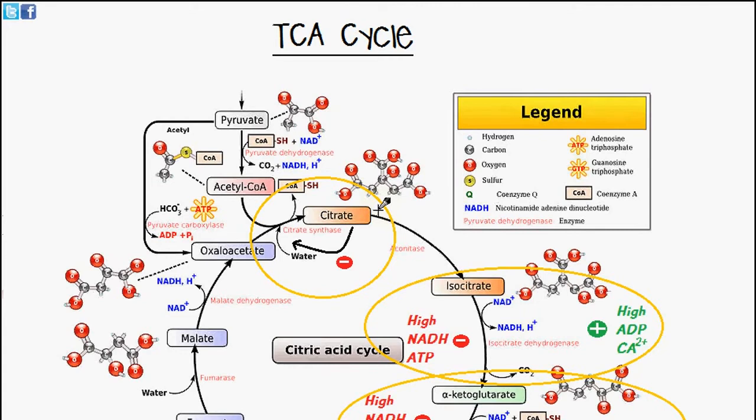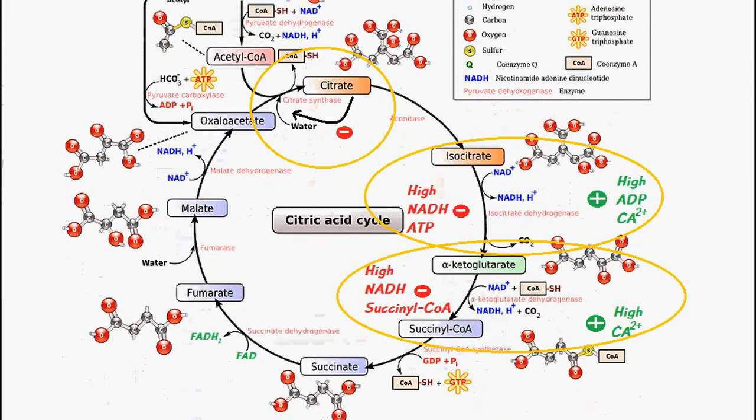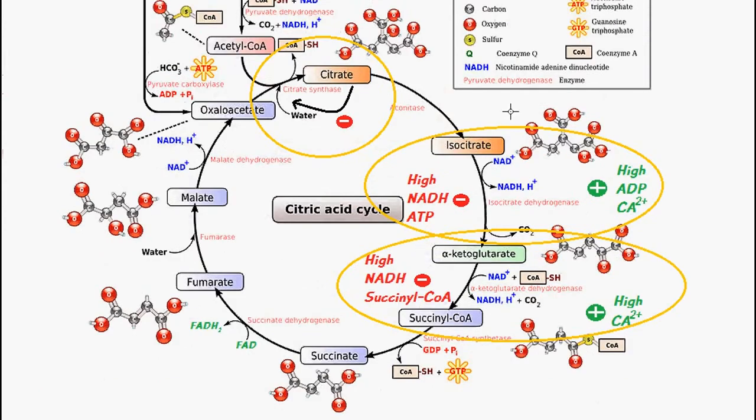Regulation of the citric acid or Krebs cycle or TCA cycle. The TCA cycle or Krebs cycle is regulated in accordance to the energy state of the cell.